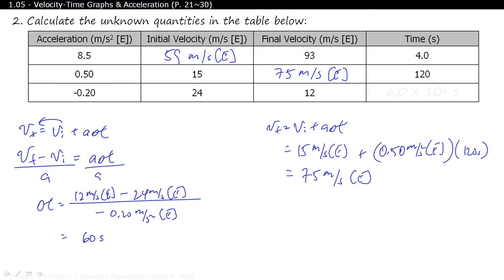60 seconds is hard to discern whether it's 1 sig fig or 2 sig fig. Since 0.20 is 2 sig figs, your final answer should also be 2 sig figs. The best way to represent this is in scientific notation: 6.0 × 10¹ seconds. You could also write it as 6.0 × 10 to the 1 — both are correct.